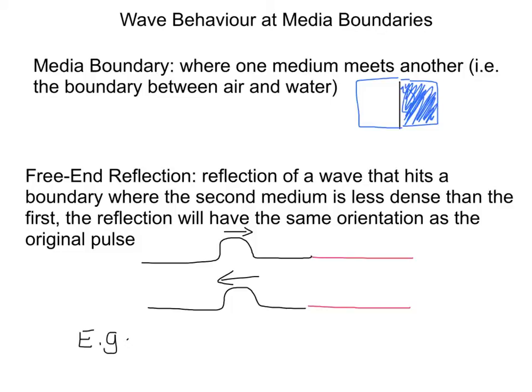For example, if here I have air, then this is water, then this line in between separating the two is the boundary. For instance, like the air above a lake. The very surface of the lake would be the boundary between the two.